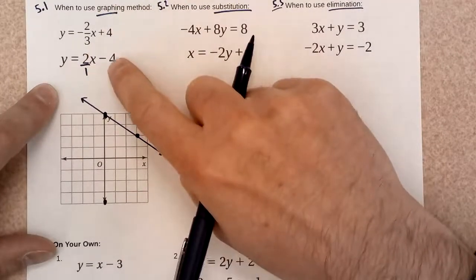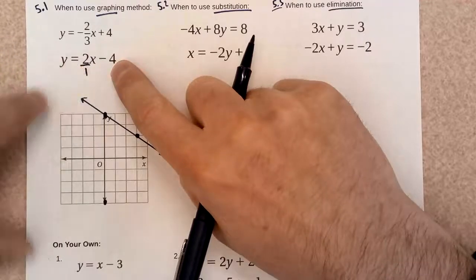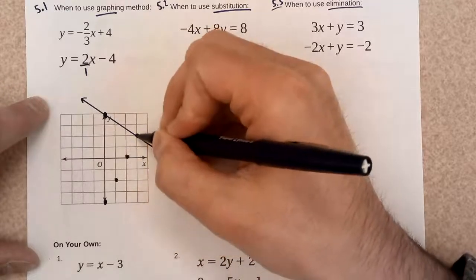So, I need to start at negative 4. I need to go up 2, over 1, up 1, 2, over 1, up 2, over 1, up 2, over 1.